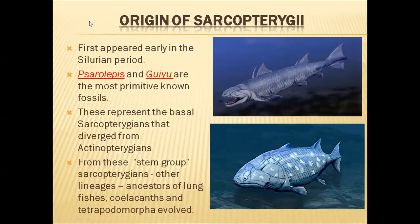Coming to the origin of Sarcopterygii — scientists predict that Sarcopterygii appeared first in the early Silurian period. The most primitive fossils are Psarolepis and Guiyu. In this slide, the upper picture is the reconstructed picture of Psarolepis and the lower picture is the reconstructed picture of the Guiyu fossil. Psarolepis and Guiyu are the most primitive fossils of Sarcopterygii.